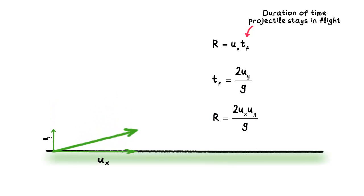If the angle of projection is too small, the vertical velocity is too small, and the time of flight is too short, resulting in a short horizontal distance travelled.